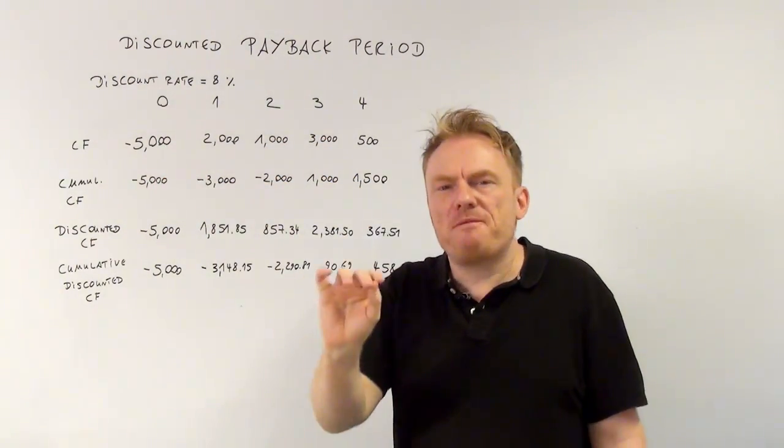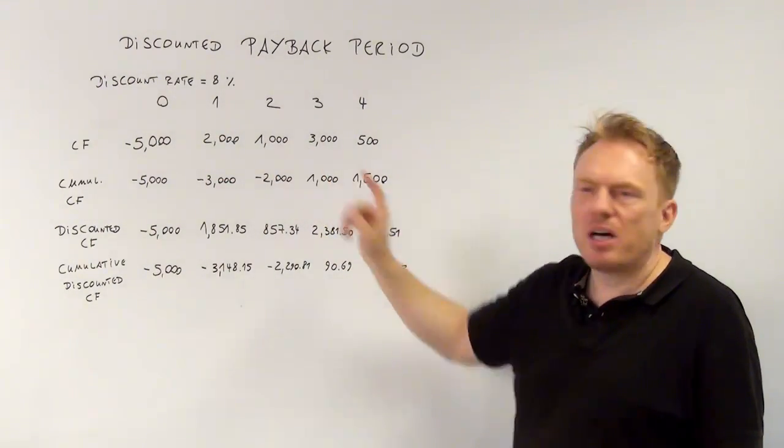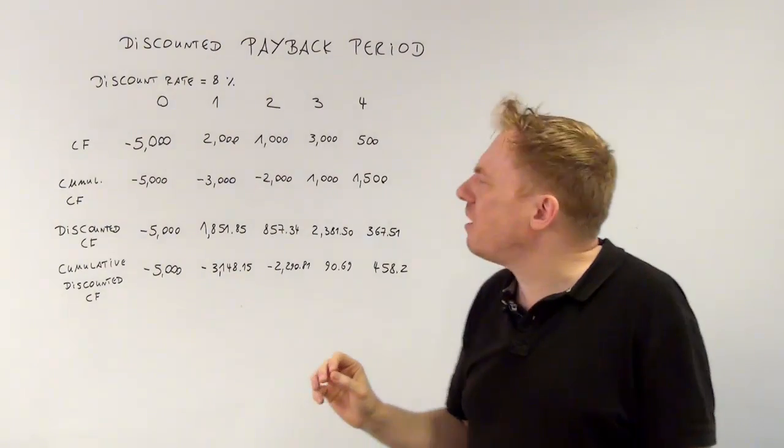You buy a machine, you pay $5,000, get $2,000 in period 1, $1,000 in period 2, and so on.